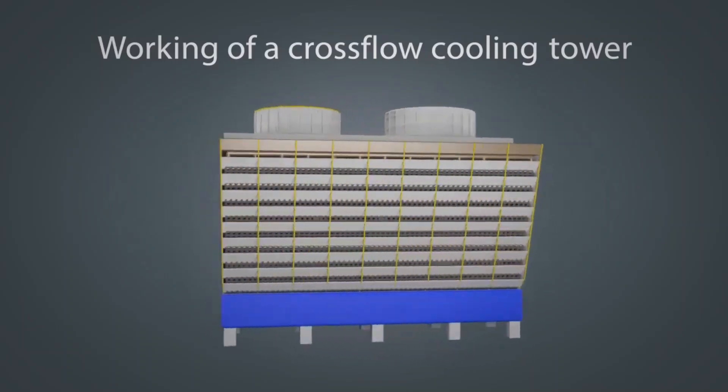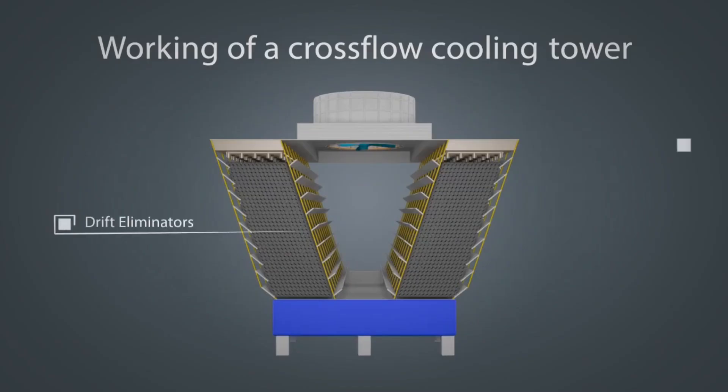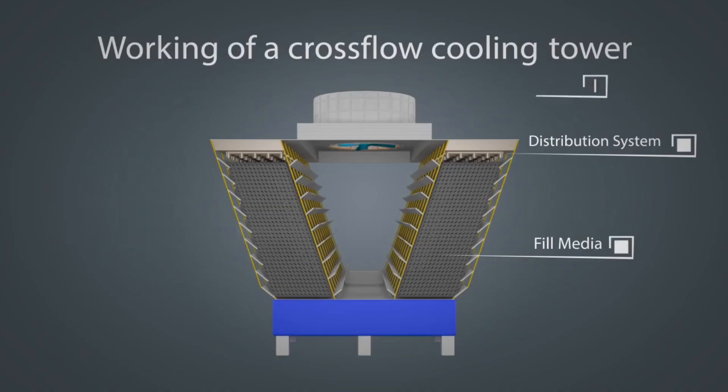Now, let's understand the components and working of a cross flow type cooling tower. This type of cooling tower has drift eliminators, distribution system, fill media, and exhaust fan.